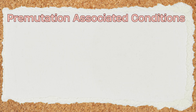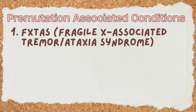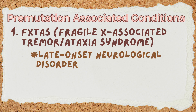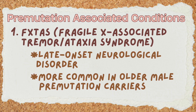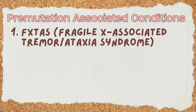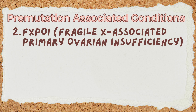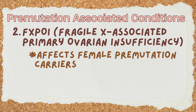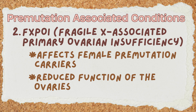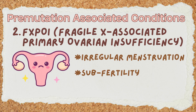The full mutation is what causes Fragile X syndrome, but the pre-mutation can also have serious consequences. There are two notable conditions linked to the pre-mutation. The first is FXTAS, or Fragile X associated tremor and ataxia syndrome — a late-onset neurological disorder seen more commonly in older male pre-mutation carriers. Symptoms include progressive tremors, balance and walking problems, memory loss, and cognitive decline. The other is FXPOI, or Fragile X associated primary ovarian insufficiency, which affects female pre-mutation carriers and involves reduced function of the ovaries. It can cause irregular menstrual cycles, subfertility, and premature menopause.